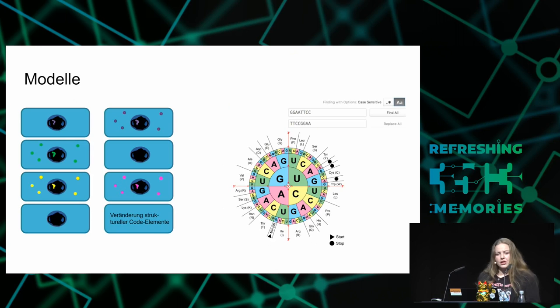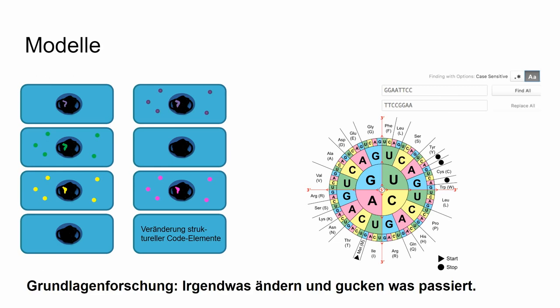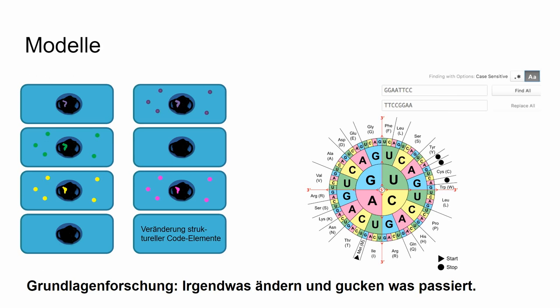How is this used inside a laboratory? We want to force cells to produce something they would not originally do, or make them produce something in a different way, or change structural parts within the DNA — not encoding for proteins but something else. Either by introducing new sequences or by shifting the codon reading frame. In basic research, we change something and look at what happens.